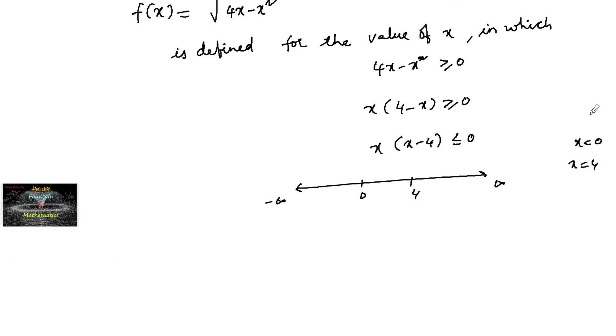By the wavy curve method, we can see it changes from positive to negative at point 4, and at 0 it changes from negative to positive. Clearly, it's negative in the interval 0 to 4.